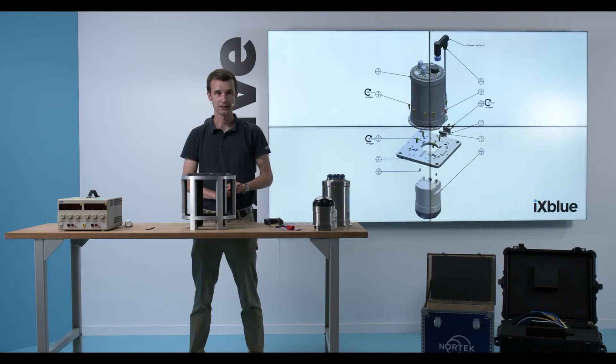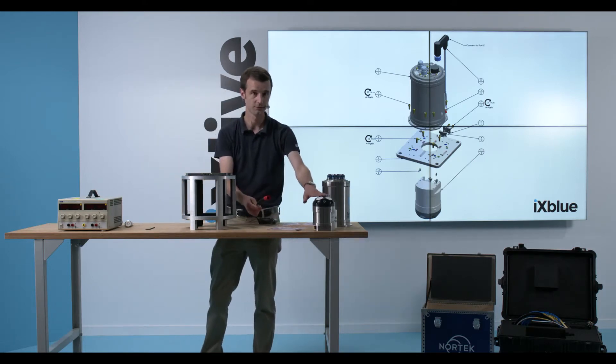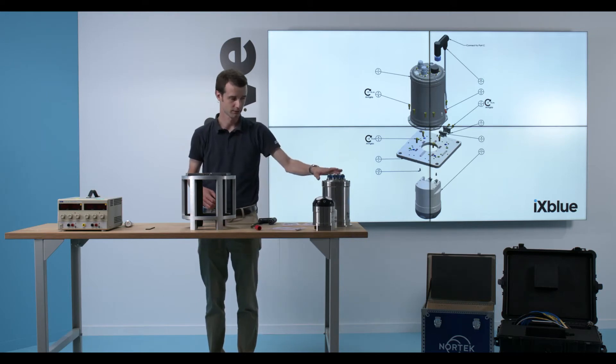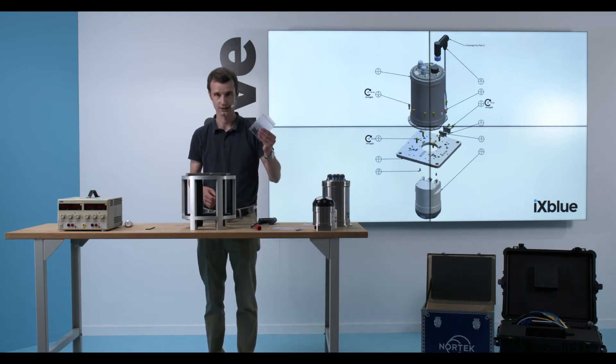For the mechanical fit, I will have four simple steps. The first thing to do will be to connect the cables to the DVL, then to fit the DVL to the plate, then the ROVINZ to the plate, and then to fix the cableway.